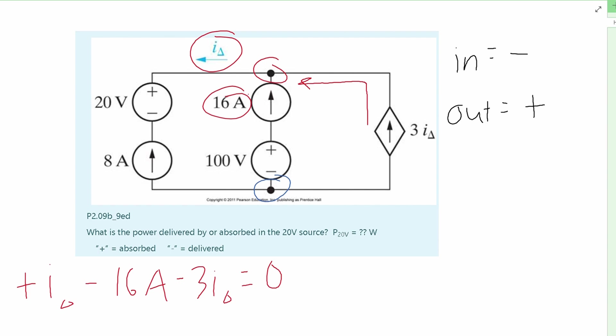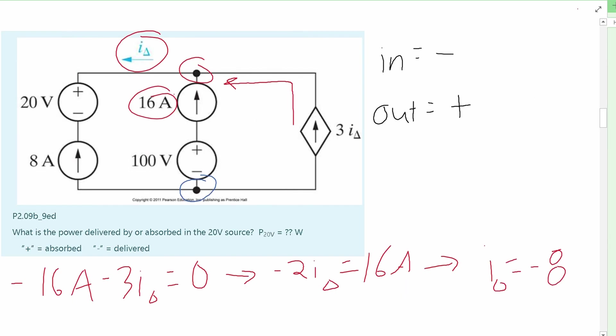From here, we are just going to add our deltas together, our I deltas, and we're going to get a negative 2 I delta, and then we can just move 16 over to the other side and we get 16 amps. After we do this, we can see that our I delta is equal to a negative 8 amps.